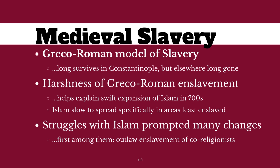Medieval slavery comes out of the fall of the Greco-Roman model. The Greco-Roman model does survive in certain pockets, especially in Constantinople. But in large part, the harshness of Greco-Roman slavery means that when there are no longer large-scale wars to bring in new populations of slaves, there isn't much to maintain it. That history of incredibly harsh enslavement may help explain the swift rise of Islam — those areas that willingly go over to Muslim governance are in areas where enslavement was most harsh, largely because Islam has a very important set of rules different from Christianity and Judaism. Muslims are not allowed to enslave fellow Muslims.